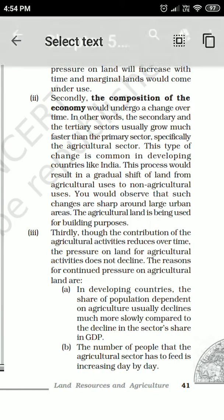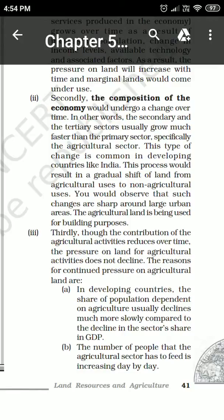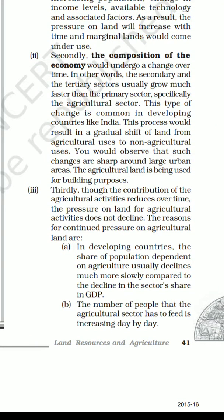The second change is that the composition of the economy changes. There are three parts of the economy: primary, secondary, and tertiary. With the passage of time, dependence on secondary and tertiary sectors starts increasing, while agriculture — part of the primary sector — becomes relatively smaller. The economy shifts from primary to secondary and tertiary.